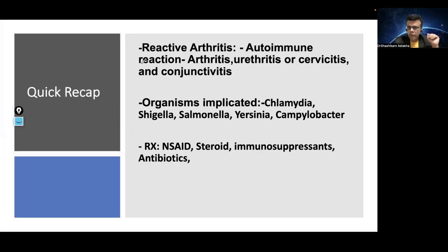Quick recap: Reiter's syndrome consists of an autoimmune reaction presenting as arthritis, urethritis, and conjunctivitis. Chlamydia, Shigella, Salmonella, Yersinia, and Campylobacter are the common causative organisms. NSAIDs, steroids, immunosuppressants, and antibiotics are commonly used for treatment. Thank you and see you in the next video.